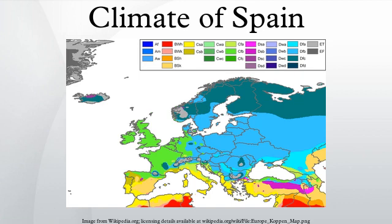The oceanic climate is located in the northern part of the country, especially in the regions of Basque Country, Asturias, Cantabria, and Galicia. The semi-arid climate is located in the southeastern part of the country, especially in the region of Murcia and in the Ebro Valley. In contrast to the Mediterranean climate, the dry season continues beyond the end of summer.